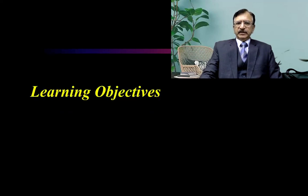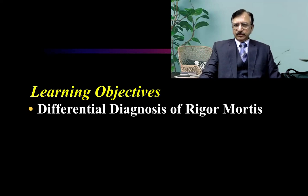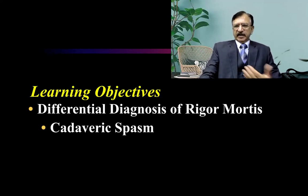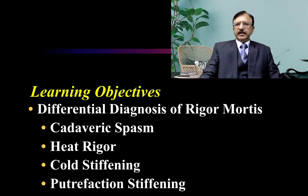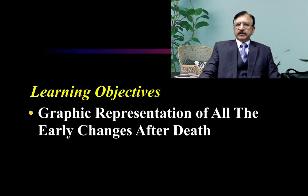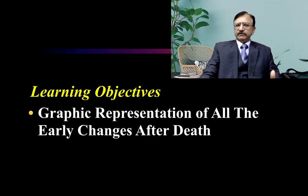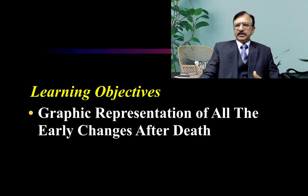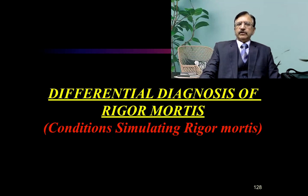The learning objective of this lecture is that we will learn what are the differential diagnoses — the conditions which simulate rigor mortis — that is cadaveric spasm, heat rigor, cold stiffening, and putrefactive stiffening. These are the conditions which simulate rigor mortis and they should be differentiated. I will also discuss the graphic representation of all the early changes after death: cooling of the body, postmortem staining, and rigor mortis.